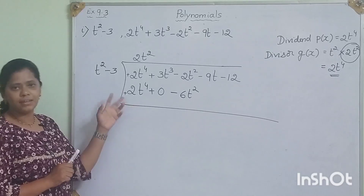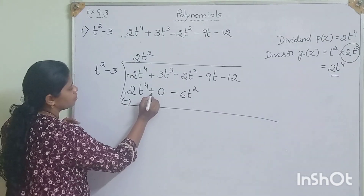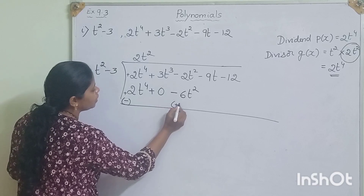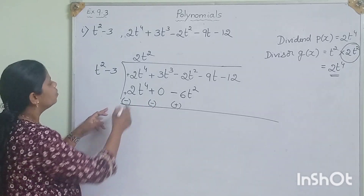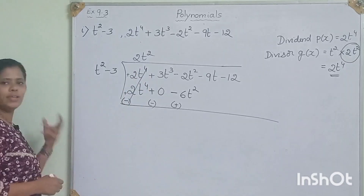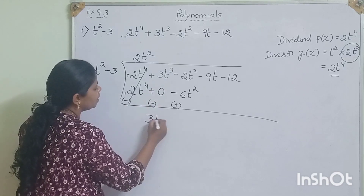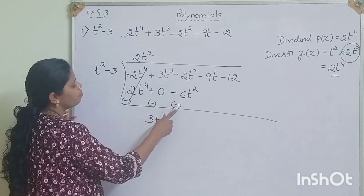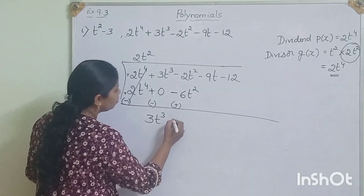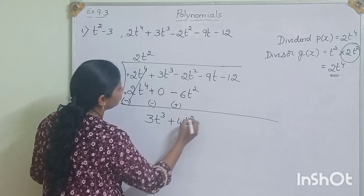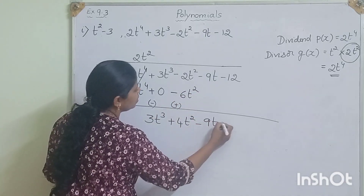In division we subtract, so we change the signs. 2t⁴ minus 2t⁴ cancels. Then 3t cubed minus 0 is 3t cubed. Then minus 3t squared plus 6t squared gives us plus 4t squared. We bring down the remaining terms: minus 9t minus 12.